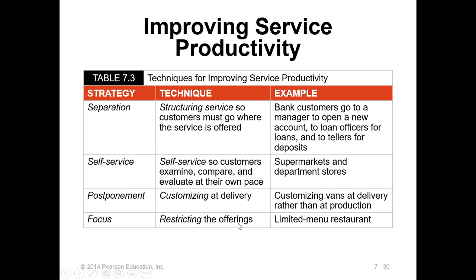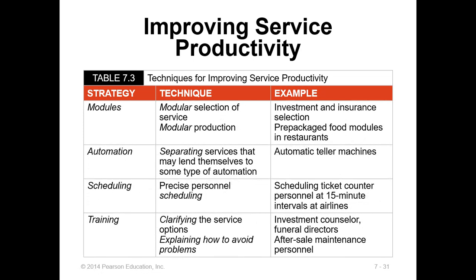Then we have focus — restricting the offering. In the service industry we should have a focused offering; we cannot offer so many things that we cannot control and manage. So we need to have a limited menu in restaurants. In the service industry we also have modules — modular selection of services. In investment or insurance, you have a portfolio of investment modules. We have prepackaged food modules in restaurants.